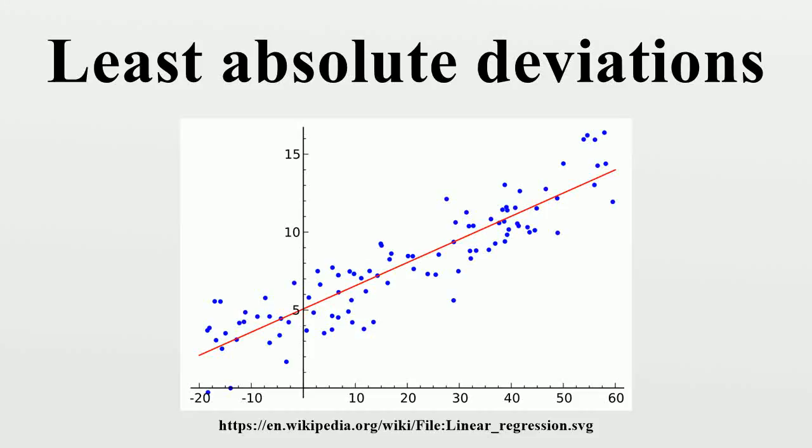Least absolute deviations, also known as least absolute errors, least absolute value, least absolute residual, sum of absolute deviations, or the L1 norm condition, is a statistical optimality criterion and optimization technique. Similar to the popular least squares technique, it attempts to find a function which closely approximates a set of data.